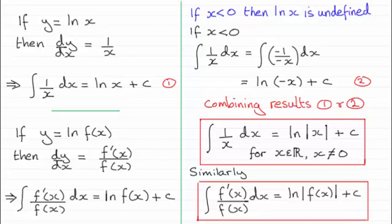So I hope that's given you an idea why we write the mod sign around the function of x or just x itself there, in case our value of x was a negative value. Okay?